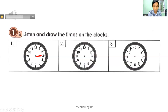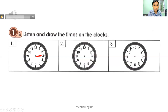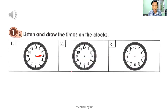Number two: it's half past seven. Listen and draw the time — it's half past seven. You have to draw an hour hand pointing toward seven and a minute hand pointing to six, so it shows half past seven.